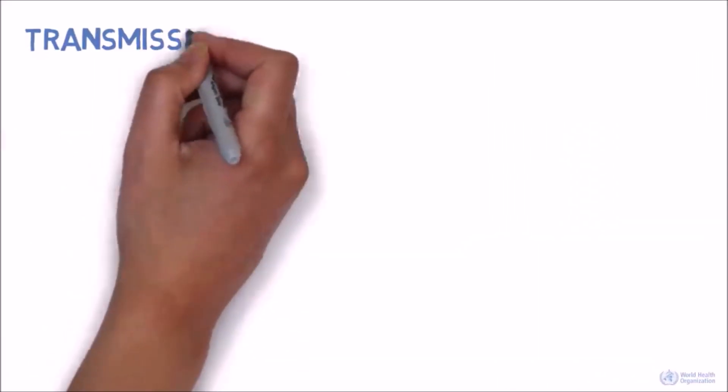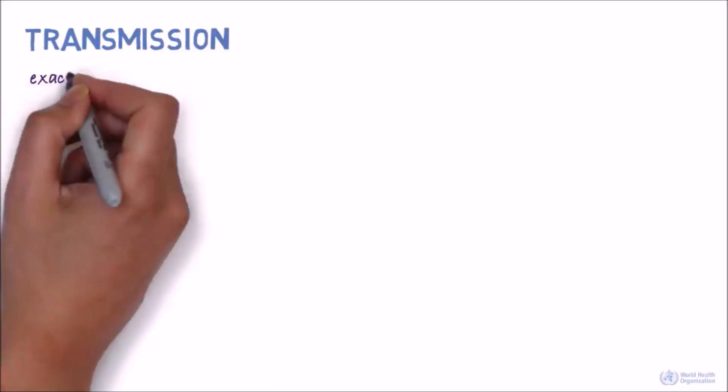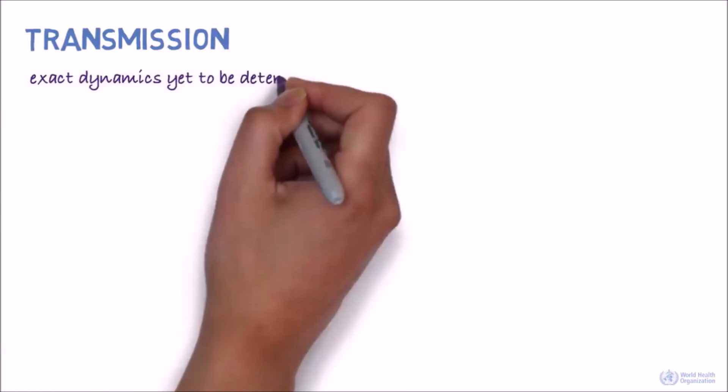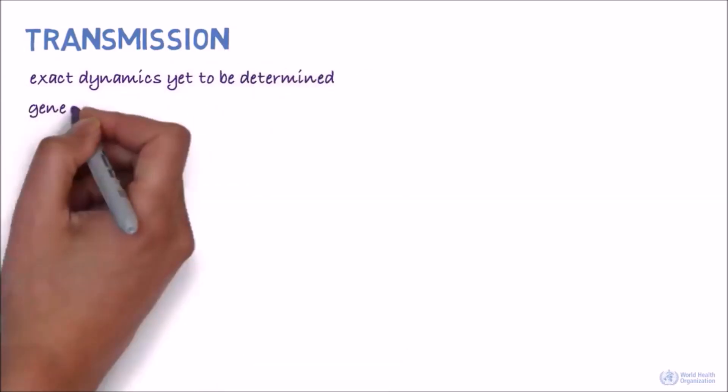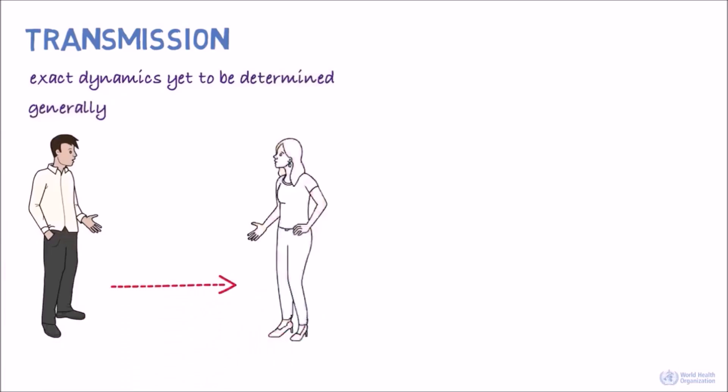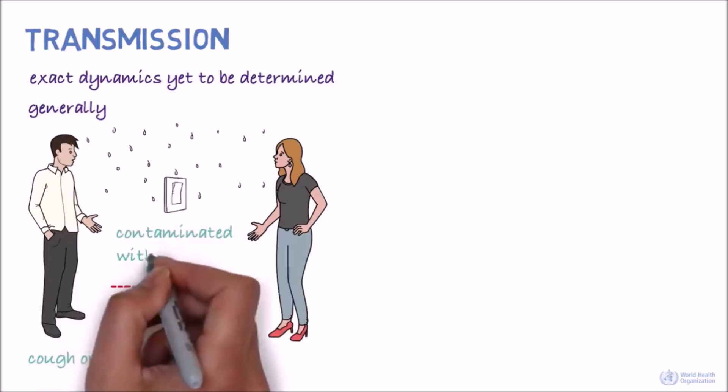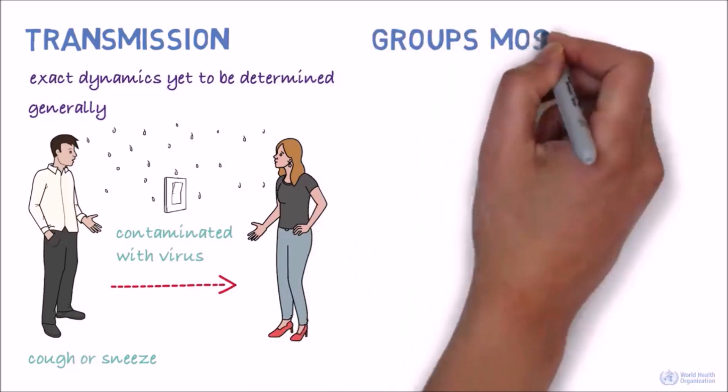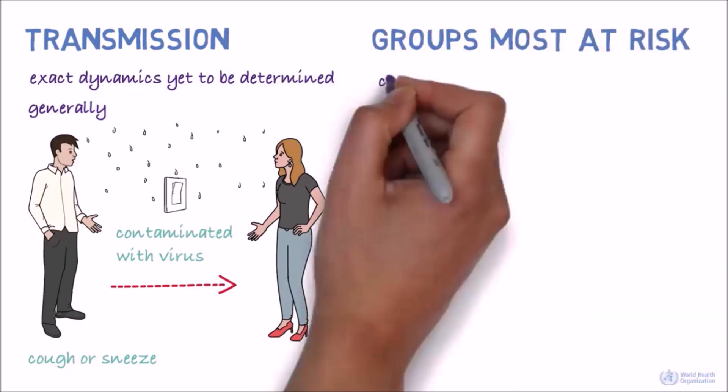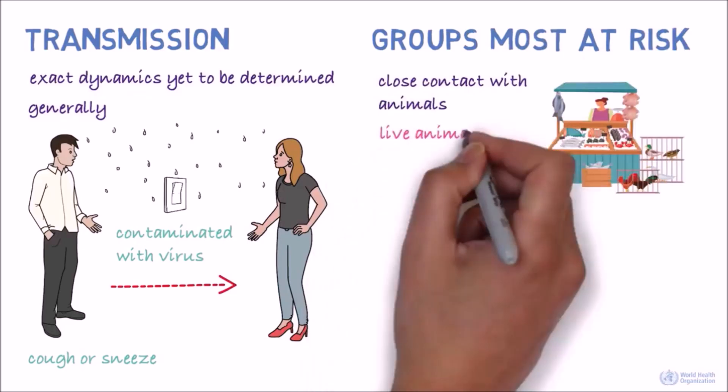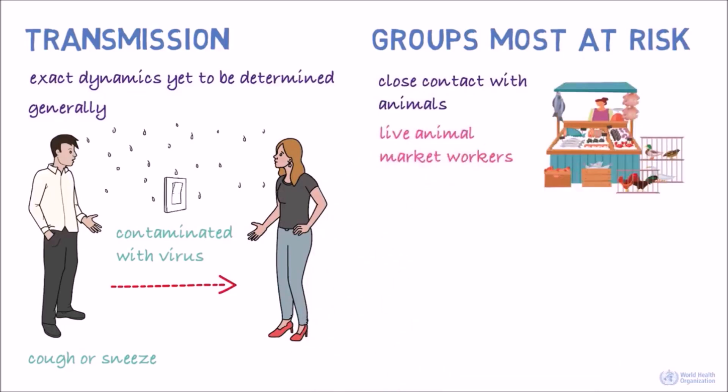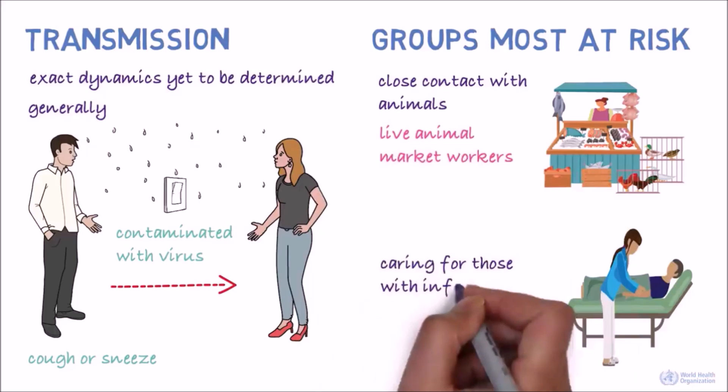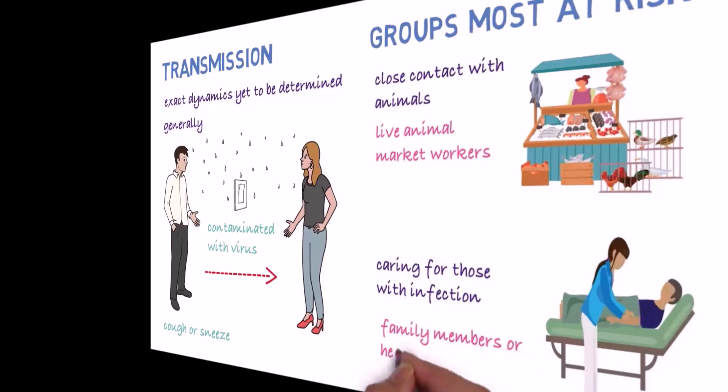How is it transmitted? The exact dynamics of how the virus is transmitted is yet to be determined. In general, respiratory viruses are usually transmitted through droplets created when an infected person coughs or sneezes, or through something that has been contaminated with the virus. People most at risk of infection from the novel coronavirus are those in close contact with animals, such as live animal market workers, and those who are caring for people infected with the virus, such as family members or healthcare workers.